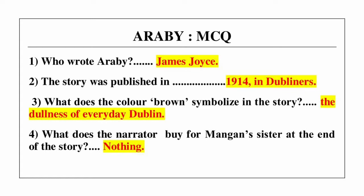Question number 3: what does the color brown symbolize in the story? Answer is the dullness of everyday Dublin.